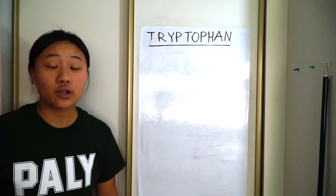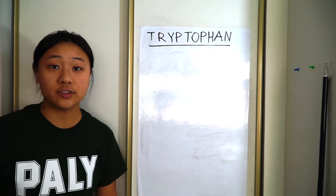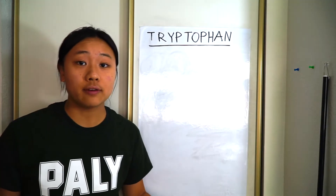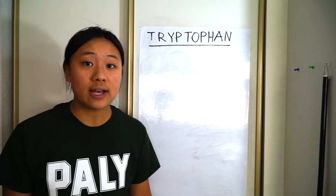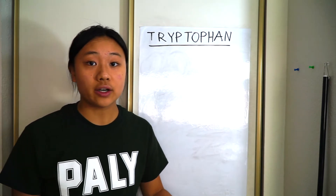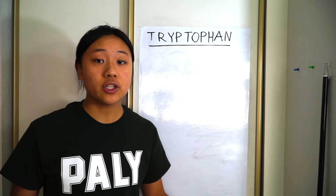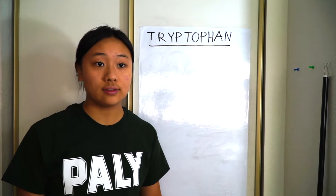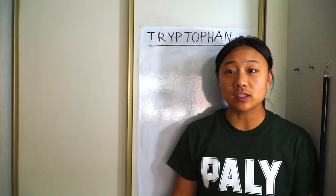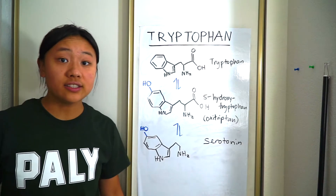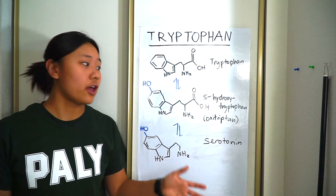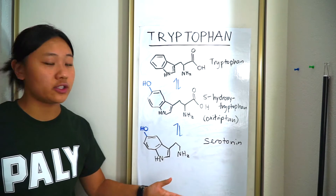So you know how I said there are 20 amino acids? That only means 20 main amino acids. There's always derivatives of the 20 main amino acids and other ones that are used in proteins, but they're not as common, so they're not counted in the 20 main amino acids. Well, tryptophan has a cousin, and this cousin is 5-hydroxytryptophan, otherwise known as oxytryptin.